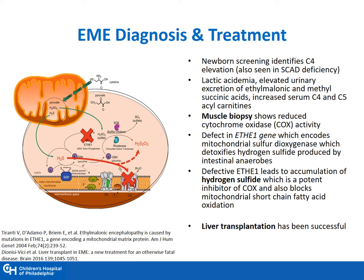Regarding genetics, defects in ETHE1 lead to the accumulation of hydrogen sulfide, which is a potent inhibitor of COX and also blocks mitochondrial short-chain fatty acid oxidation. In some patients, liver transplantation has been successful.